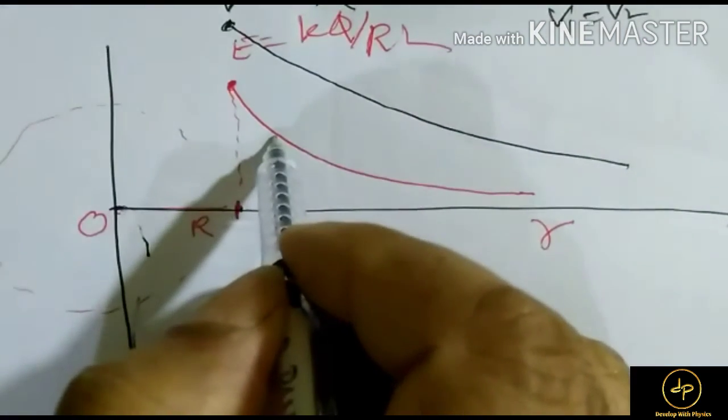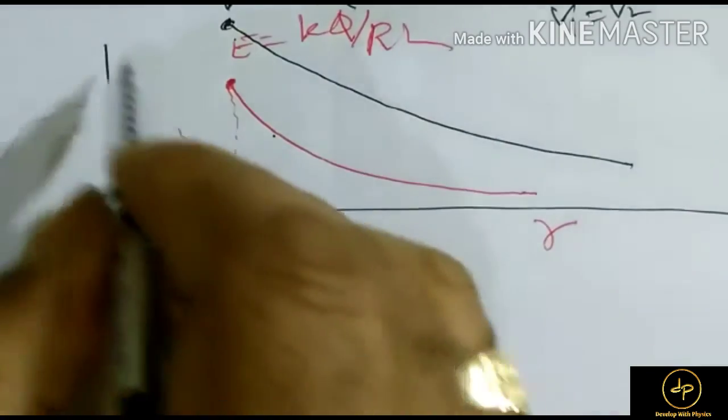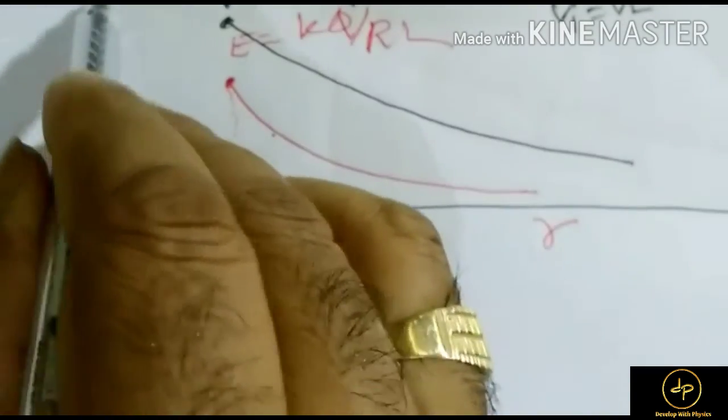From zero to R, the potential is constant. This is constant potential inside the shell.